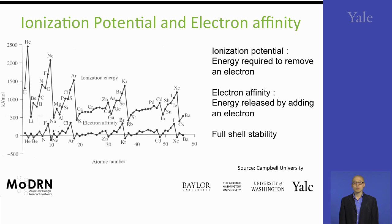The next property is electron affinity. It's the energy gained from adding an electron to a neutral atom. The best way to think about this is to connect it with electronegativity — the more electronegative an atom is, the higher the energy gain when one adds an electron to it. Therefore, it also follows a similar trend as electronegativity.